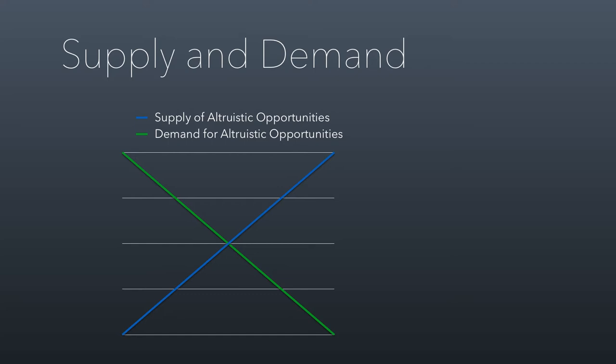The supply curve is upward sloping, meaning the more of this you do, the more expensive it becomes. Using immunizations as an example, supplying immunization to a kid who lives in an urban area is less expensive than the immunization that has to go out to a very remote rural area. So the more of these you do, the more expensive they are to provide — that's why the supply curve is upward sloping.